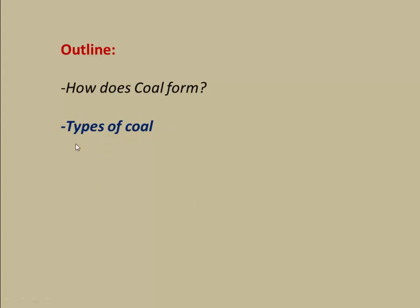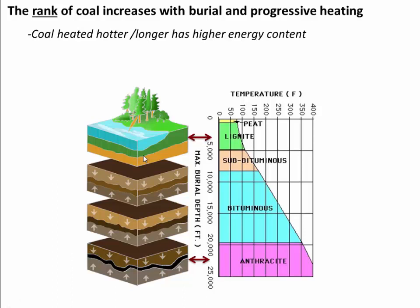Let's wind down here by looking at different types of coal and talk a little bit about energy density. Types of coal are referred to by their rank, and there are really four different types: lignite, subbituminous, bituminous, and anthracite. These are formed by being buried to different depths. Anthracite is formed by being buried to the greatest depth — perhaps 25,000 feet — and what that means is it's exposed to a much higher temperature.